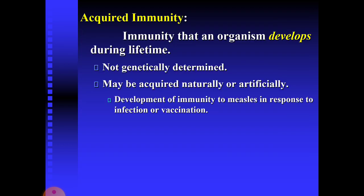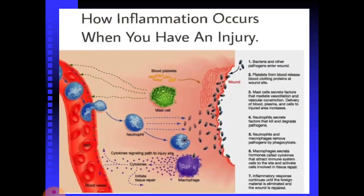Moving on to the second type of immunity — adaptive immunity, also called acquired immunity or specific immunity. This is capable of recognizing and selectively eliminating specific foreign microorganisms and molecules. Unlike innate immunity, acquired immunity reacts to specific antigen challenges and displays four characteristic attributes: antigenic specificity, diversity, immunological memory, and self or non-self recognition. This is the immunity that an organism develops during its lifetime and is not genetically determined. It may be acquired naturally or artificially — for example, development of immunity to measles in response to infection or vaccination.